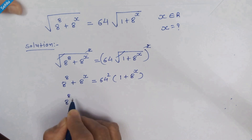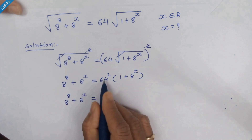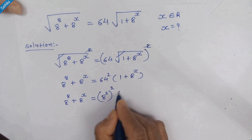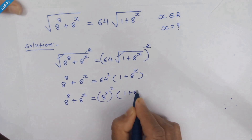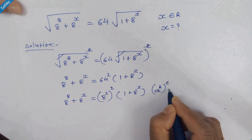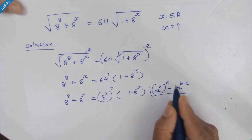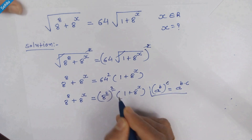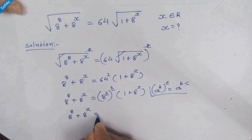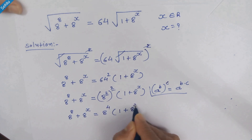In the next step we have 8 raised to 8 plus 8 raised to x is equal to 64 squared times 1 plus 8 raised to x. Now 64 is 8 squared, so 64 squared is 8 squared whole raised to 2. Applying the rule a raised to b whole raised to c equals a raised to b times c, the exponents multiply to give 8 raised to 4 times 1 plus 8 raised to x.